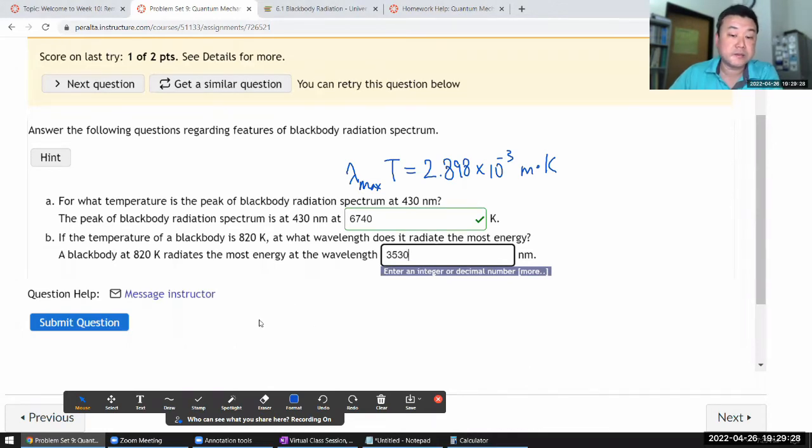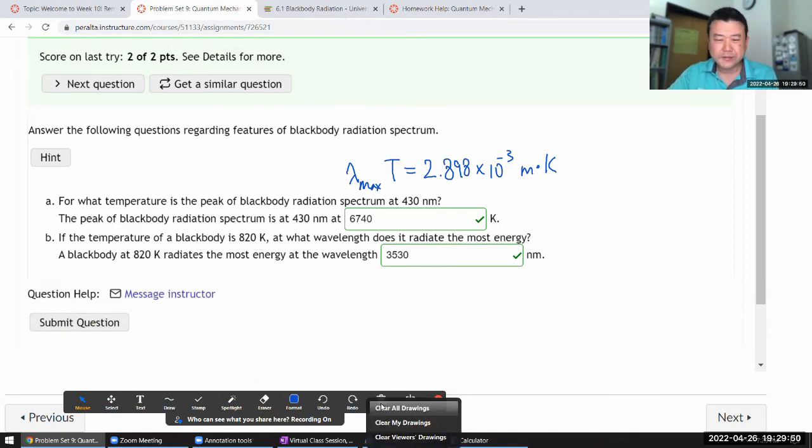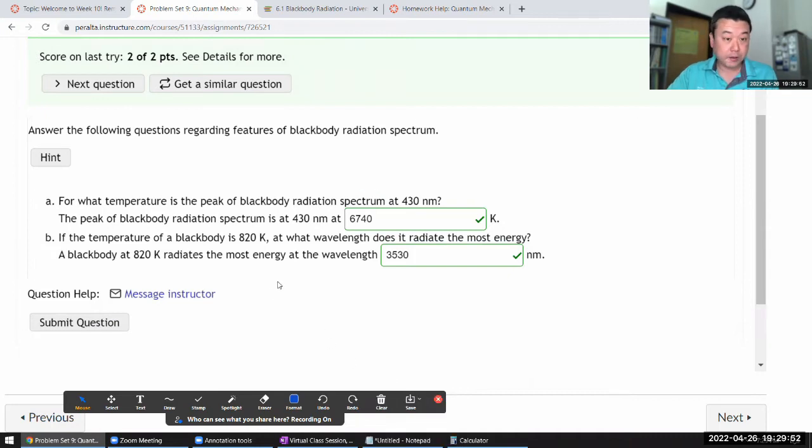This is something that's at 820 Kelvin—it might start to glow but it wouldn't be glowing very brightly because most of its radiated energy is in the infrared. There might be a very tiny tail portion in the red color, which is what our eyes would see. 820 Kelvin, I don't think it quite glows. Okay, let's keep going.